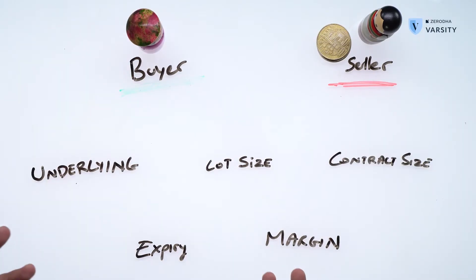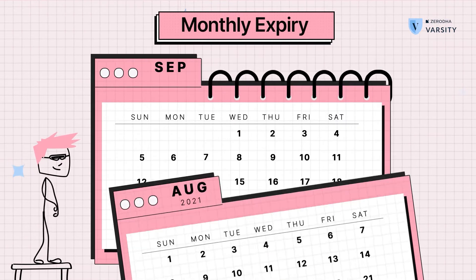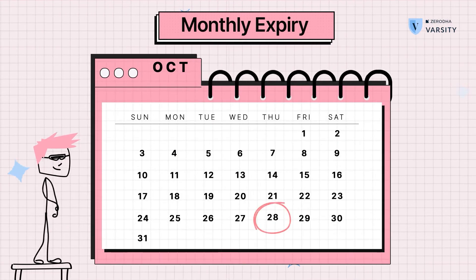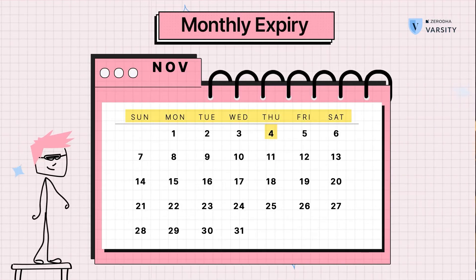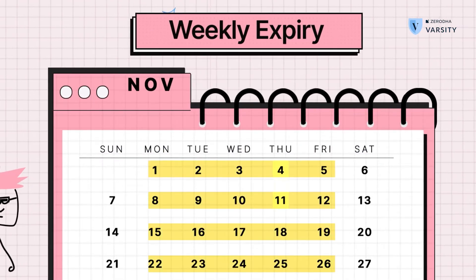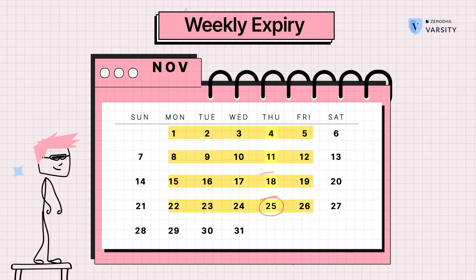Then we have expiry. In the previous video, we talked about an example where they were exchanging gold — that was a 30-day obligation, meaning they would transact on the 30th day. Futures contracts also have a time definition of when the contract expires — that's your expiry. In equity, the last Thursday of every month is the expiry date. After that day, the contract expires and ceases to exist, so all obligations must be completed on that day. There's also weekly expiry, which follows the same Thursday pattern — a weekly futures contract expires on the Thursday of that current week.